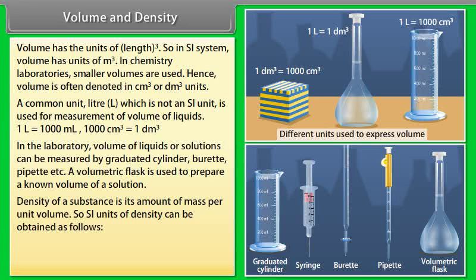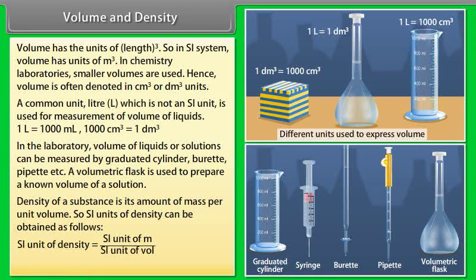Density of a substance is its amount of mass per unit volume. So SI units of density can be obtained as follows: SI unit of density is equal to SI unit of mass upon SI unit of volume, which is equal to kg/m³ or g/cm³.